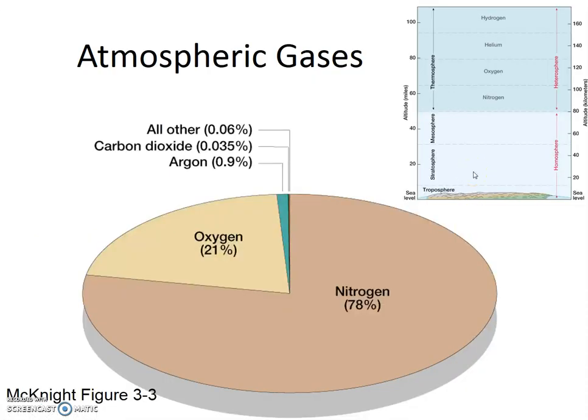Now let's be clear. In the troposphere, the stratosphere, and even the mesosphere, the most common gas is nitrogen, followed by oxygen, followed by argon. All the other gases we talk about — ozone, sulfur dioxide, carbon dioxide, carbon monoxide, etc. — occur in just trace amounts. But within the stratosphere, there is slightly more ozone than in other parts of our atmosphere. We'll talk about why in a few minutes. This area of the stratosphere is commonly called the ozone layer.